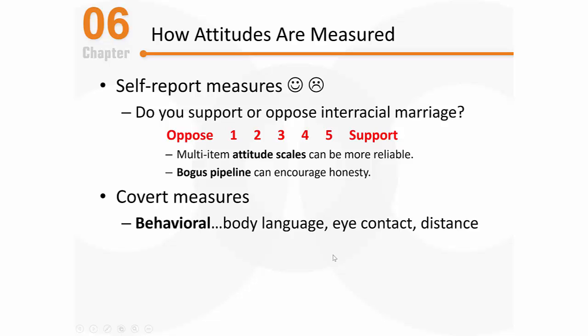One way to get an idea of how people feel about various issues is to look at how their head is responding. If I'm talking to you about interracial marriage and your head is essentially nodding up and down, that's some indication you approve of the message. But if your head is shaking left and right, that shows you disagree. These are small behavioral cues that give us a sense of how you're feeling.